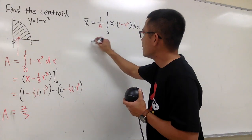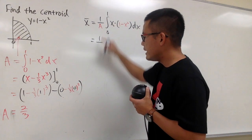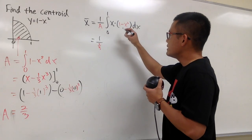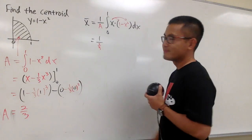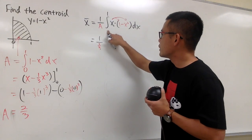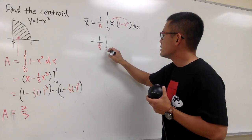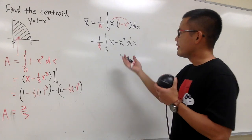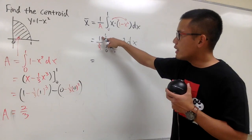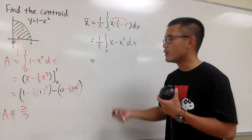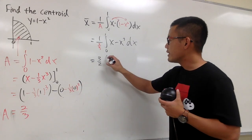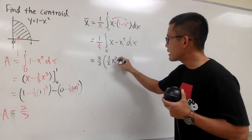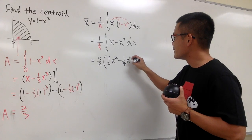Now we just have to work this out. We have 1 over A, which is 2 thirds, so let me put down 1 over 2 thirds. I cannot integrate yet because I have to distribute. So I will still keep the integral sign, 0 to 1. x times 1 is x, and x times this is minus x to the third power. The integral of x gives 1 half x squared, and then minus 1 fourth x to the fourth power.